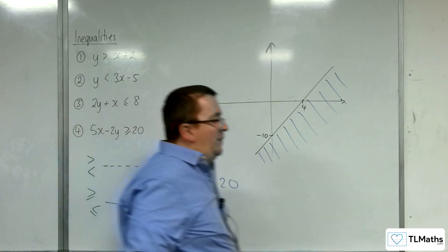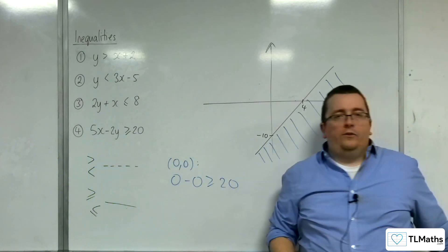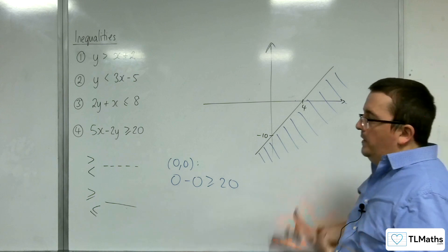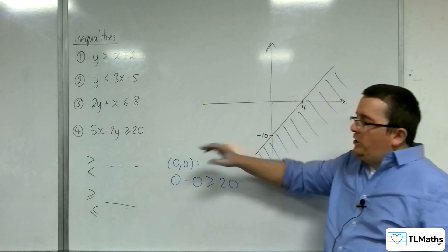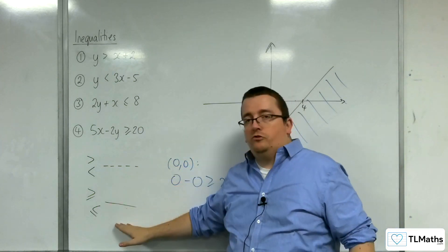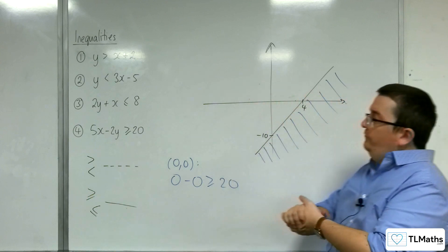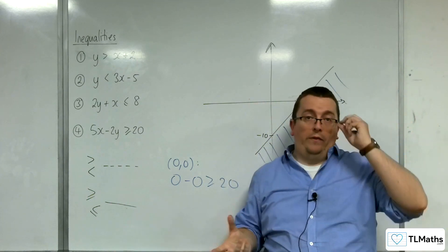So, that's basically how this works. So, we draw the graph as per usual. You make sure you're using either a dotted line or a solid line. And then you identify the region that you want.